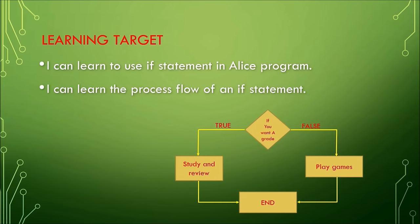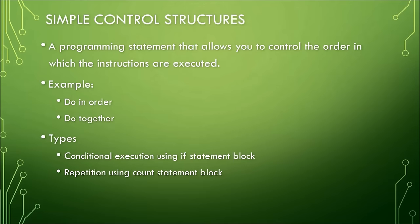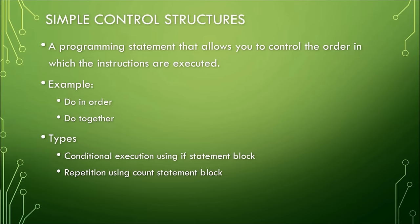Simple control structures: a control structure is a programming statement that allows you to control the order in which instructions are executed. For example, do in order and do together — you have used these control structures in many programs throughout the semester so far.